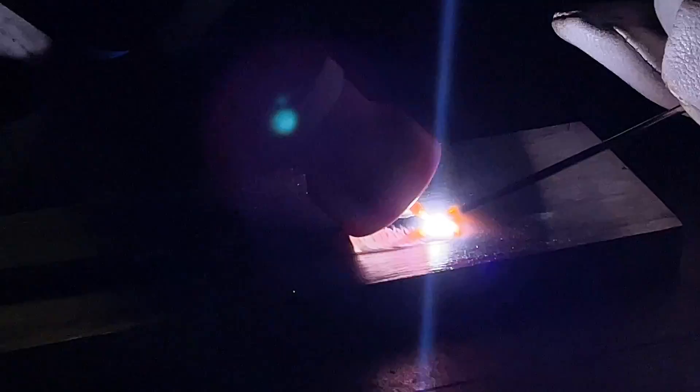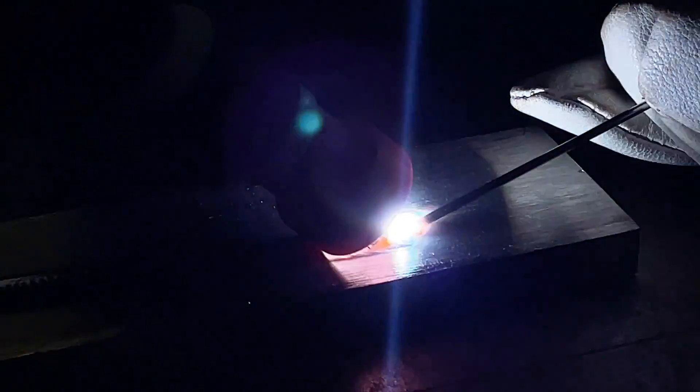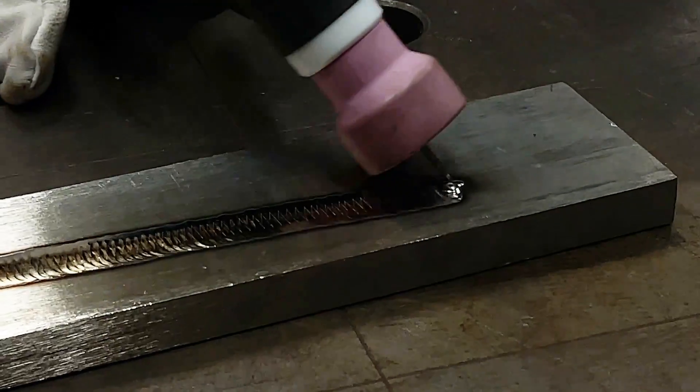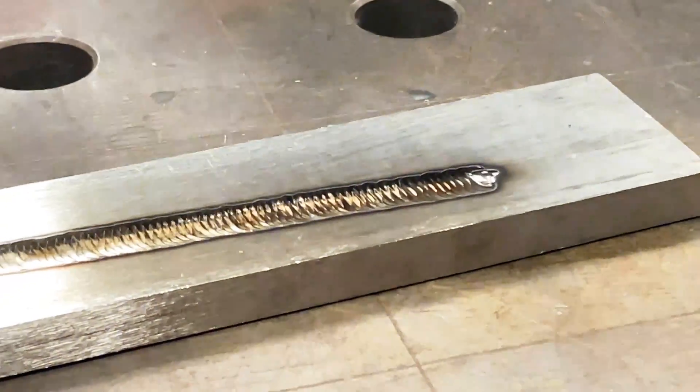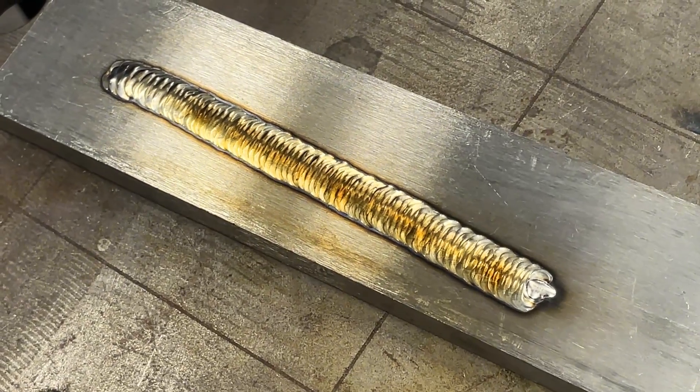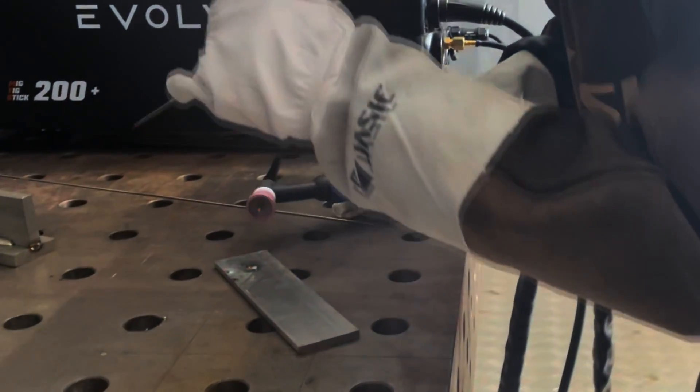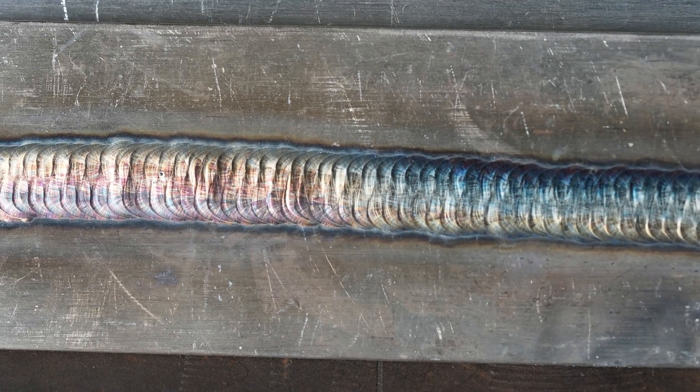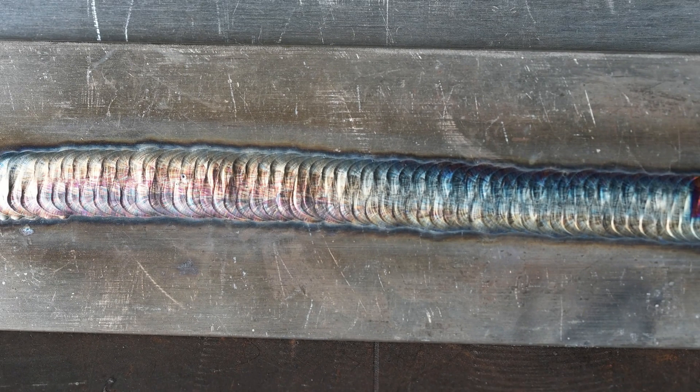As you're finishing up your weld, reduce your gas flow slightly and slowly increase your arc length to about a quarter inch. Hold it there for a few seconds. This allows the weld to cool slowly under the argon shield, creating that gorgeous gold color. Remember to continuously focus on your weld beads throughout the welding process. Watch for signs of overheating, such as discoloration beyond the desired gold hue, and adjust your settings accordingly.